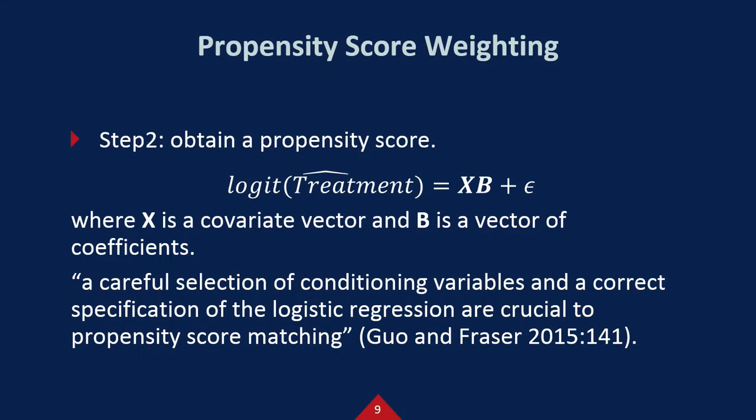The second step is obtaining a propensity score. A propensity score is the same with the predicted probability. So you just run a binary logistic regression, like this.